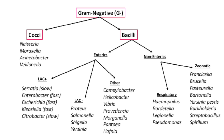Under the bacilli we can divide them into enterics and non-enterics. Under the enterics we can further divide them into lactose fermenters (lac-positive) and lactose non-fermenters (lac-negative). Under the lac-positive enterics we have Serratia, which is a slow fermenter; Enterobacter, a fast fermenter; Escherichia, a fast fermenter; Klebsiella, a fast fermenter; and Citrobacter, which is a slow fermenter.